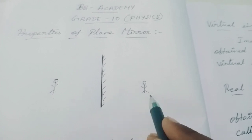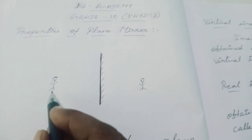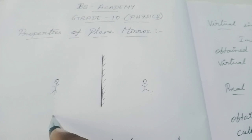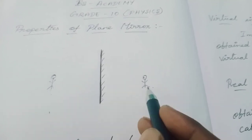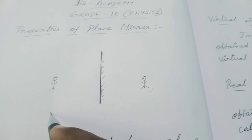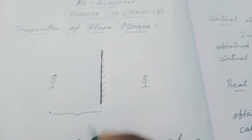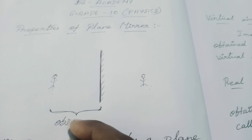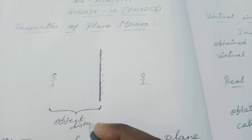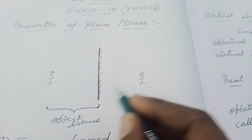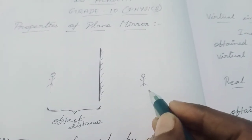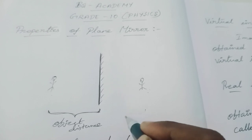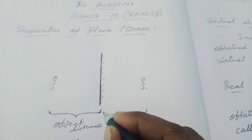Now consider the position of the person standing in front of the mirror as the object, and the image formed behind it. The distance between the object and the mirror is called the object distance. The image is formed behind the mirror, so we can also measure the image distance — the distance between the position of the image and the mirror is called the image distance.